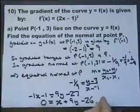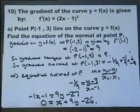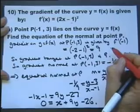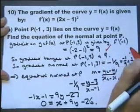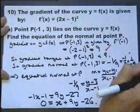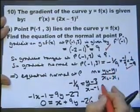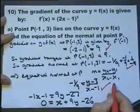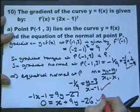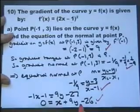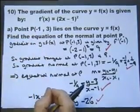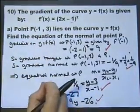And I think that'll fit the bill. So let's mark it: a mark for getting the gradient of the tangent, a mark for getting the gradient of the normal, a mark for working out the equation of the normal, and a mark for writing down a nice tidy version of the equation of the normal. That's part A. Let's move on to part B.